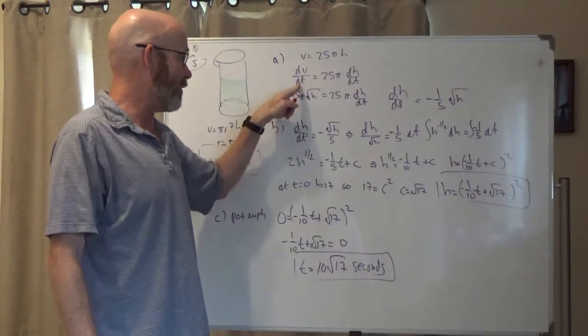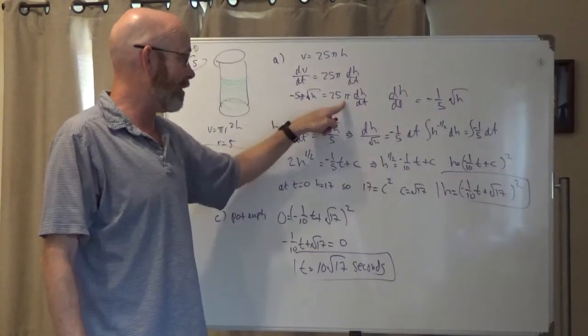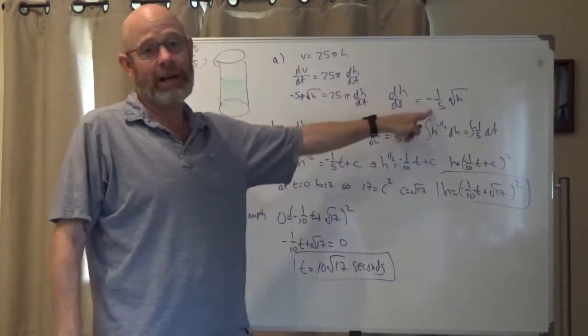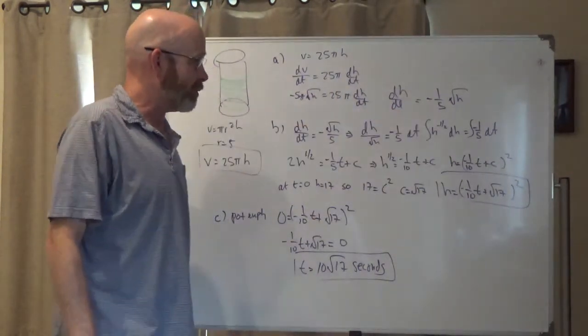But I know that this number is negative five pi root h has to be 25 pi. Just solve for dh/dt, divide by 25 pi, and I get negative one-fifth root h.